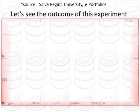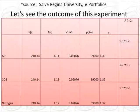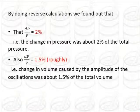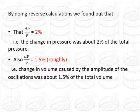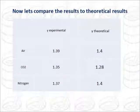Now let us see the results of this experiment. Here we performed the experiment for these three gases, where M is the mass, T is the time period, V is the volume, P is the pressure, and this is gamma and area. Now when we did some reverse calculations, we found out that the pressure was changing just by 2% of the total pressure and the volume was roughly changing by 1.5%. So these are the quantities that actually are required to mimic a reversible process. This 2% and 1.5%, this is a measure of how small is small. Now let's compare the results to theoretical results.